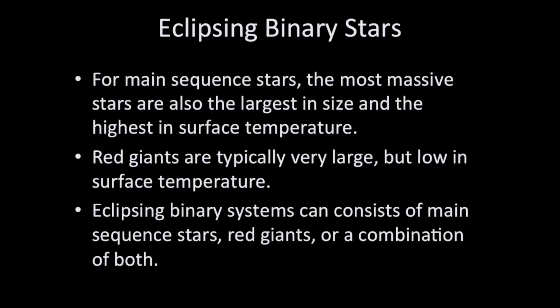Red giant stars are usually very large, bigger than all the rest, but they're low in surface temperature. Eclipsing binary systems could consist of both main sequence stars, red giants, or it could have two main sequence stars, a main sequence star and a red giant.